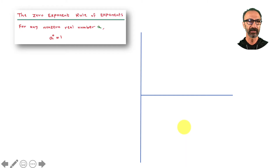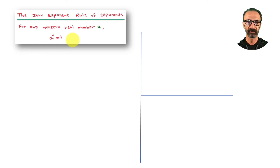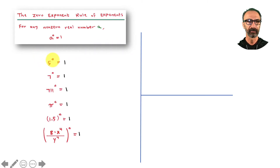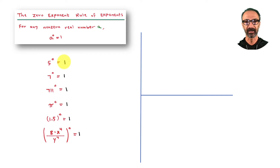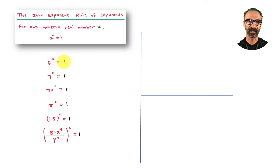Here's another rule: anything raised to the power zero is one. For example, five to the power zero is one. You can test that on a calculator — calculators are a great teaching and learning tool. In my classrooms we use graphing calculators, which are very handy for showing things like intersection points, graphs, and factoring.